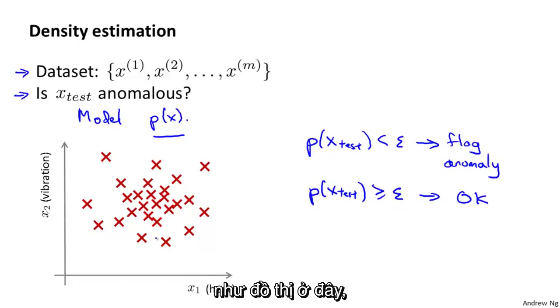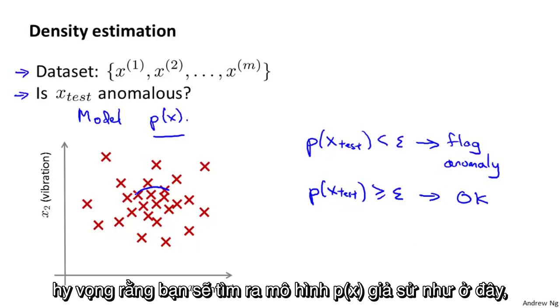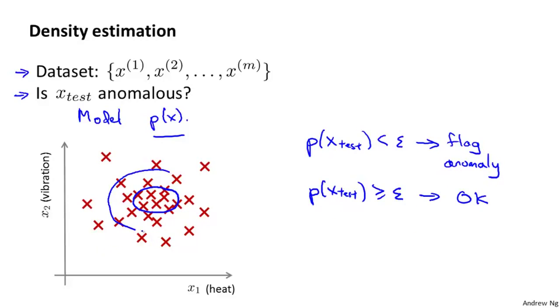And so given the training set like that plotted here, if you build a model, hopefully we'll find that aircraft engines, hopefully the model P of X will say that points that lie somewhere in the middle, that's pretty high probability.